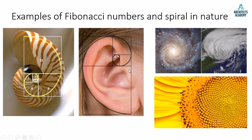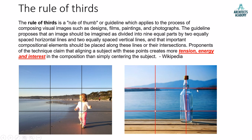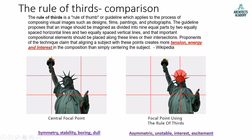The next rule is called the rule of thirds. When you divide an object or a photograph into nine parts and keep the central subject at one third of those nine parts, the photograph looks much more interesting and dramatic. By following the rule of thirds you can create tension, energy, and interest in the composition. The main subject — in this case a bottle carrying a letter — is kept at one third the distance from the edge.